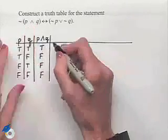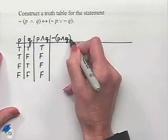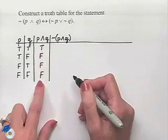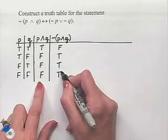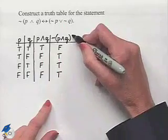Now we want the negation of that conjunction. We look at the column we just filled in and take the opposite truth values. We'll have false true true true.